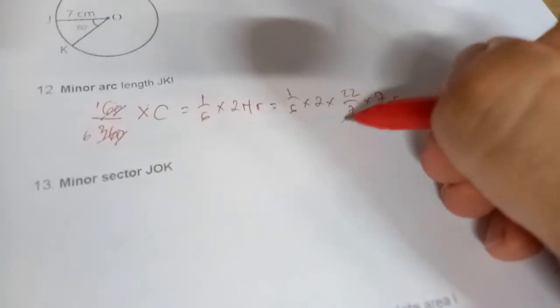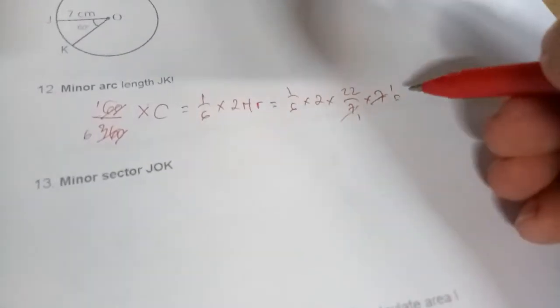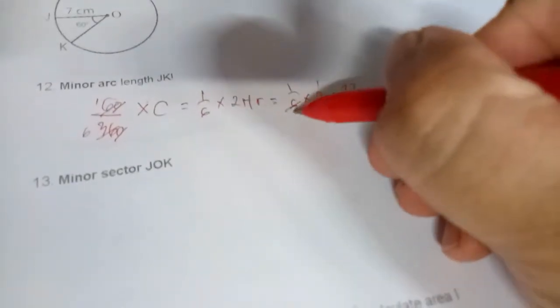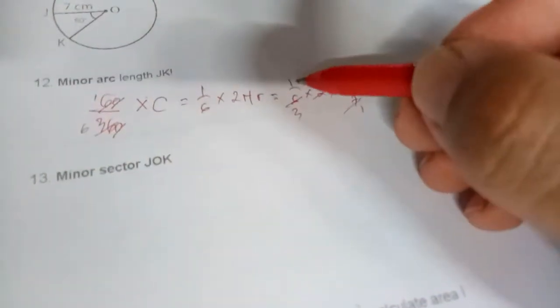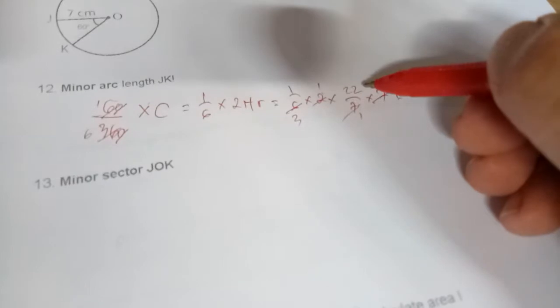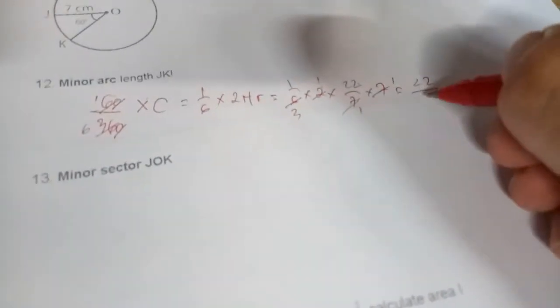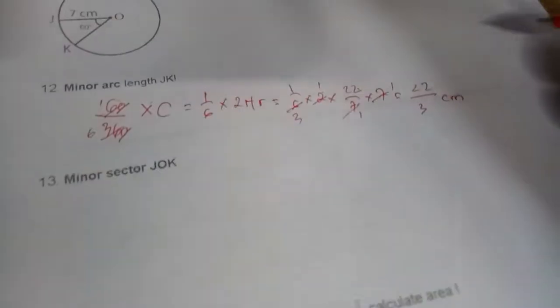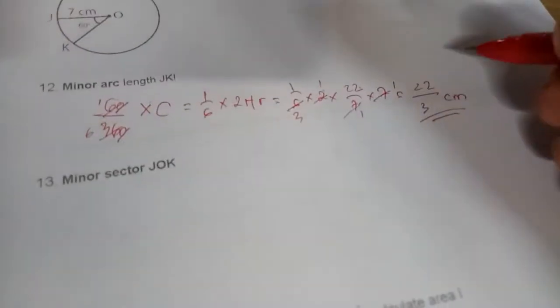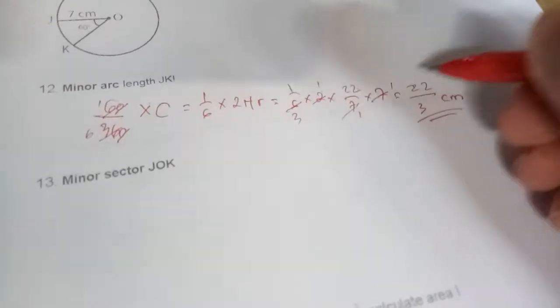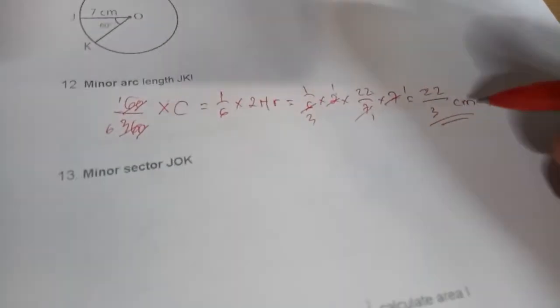The 6 with 2, that's 3. So what you need to do is multiply: 1 × 1 × 22 × 1 equals 22/3 cm. I suggest you use a fraction, but if you answer using a decimal that's okay too. You can use 22/3 cm or 7.33 cm.